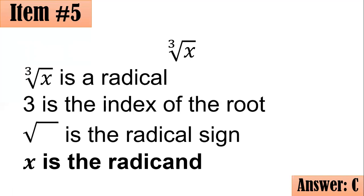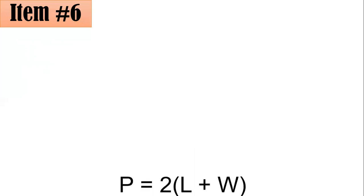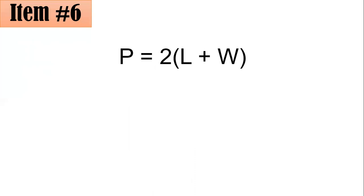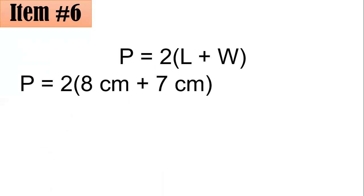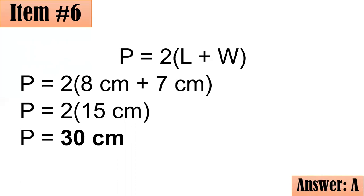Moving on to item number 6. Find the perimeter of an 8 cm by 7 cm rectangle. Is it 30, 40, 45, or 56 cm? To get the perimeter of a rectangle, use P equals 2 times the sum of length and width, or 2L plus 2W. With L equals 8 cm and W equals 7 cm, P equals 2 times (8 plus 7) equals 2 times 15 equals 30 centimeters. If you answered A, you got it right.